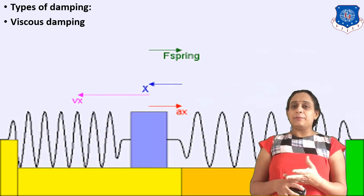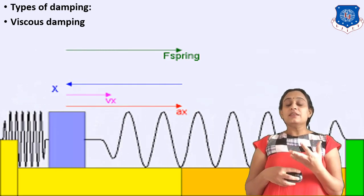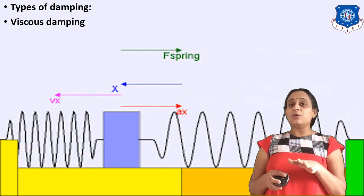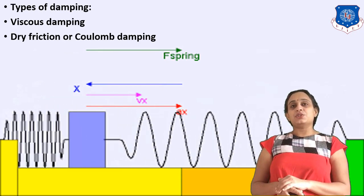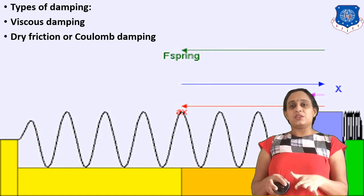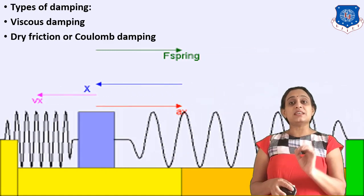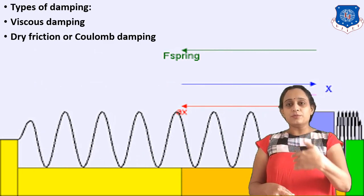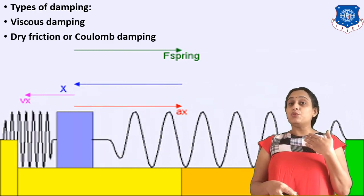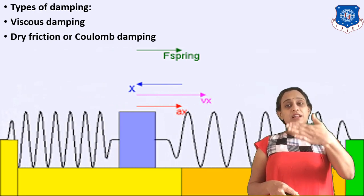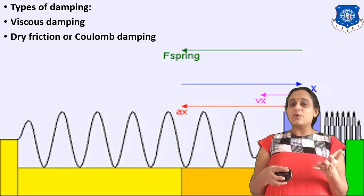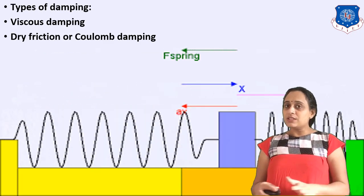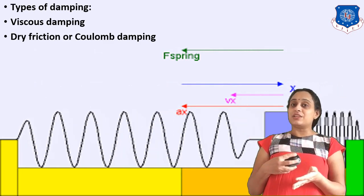In viscous damping, we use a viscous fluid as the damping medium, generally used in mechanical instruments like door closers. Next is dry friction — as seen in the diagram, friction itself reduces the motion. For example, if you are on a swing doing to-and-fro motion and you stop applying force, it returns to its original position due to air friction.